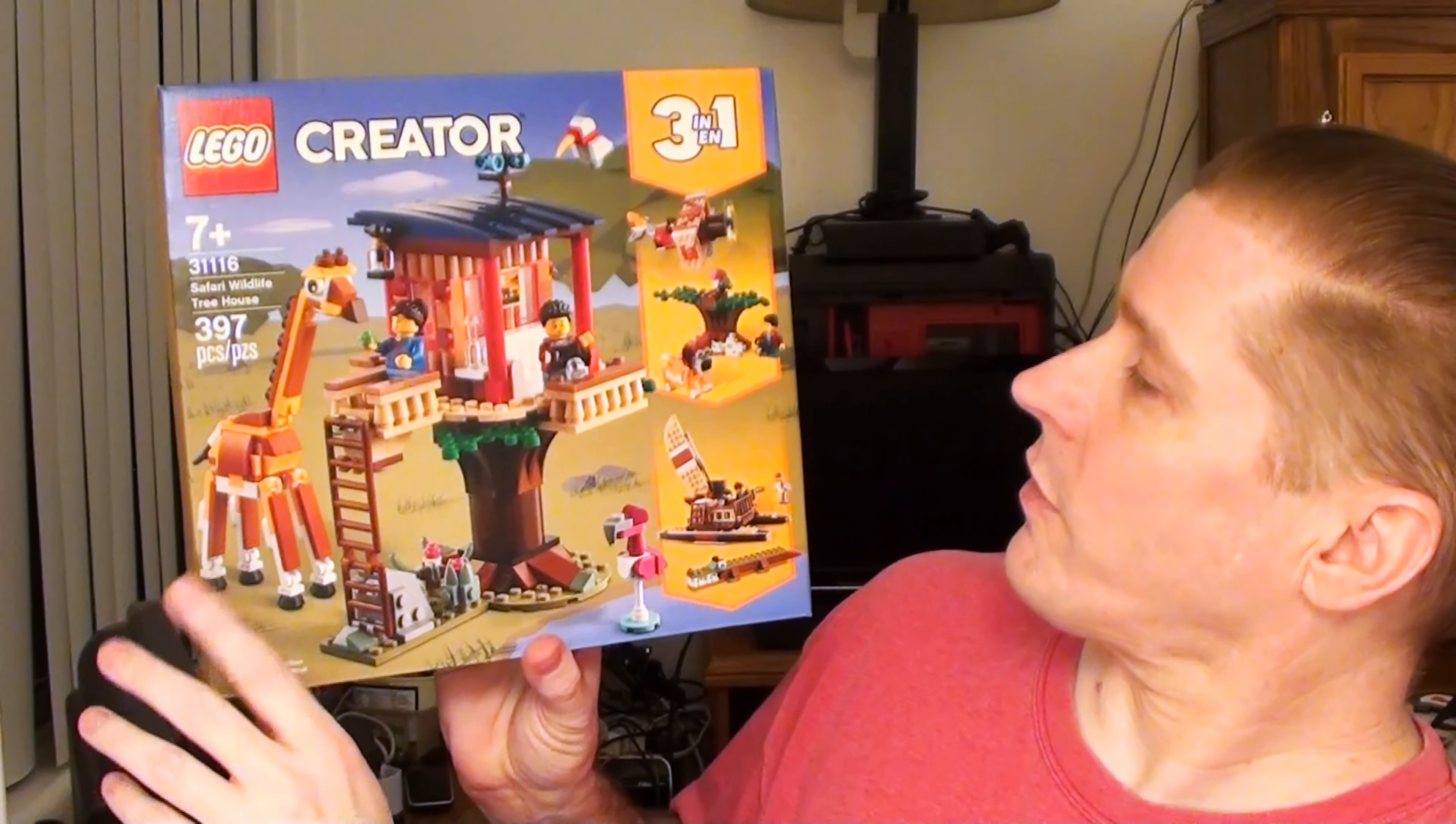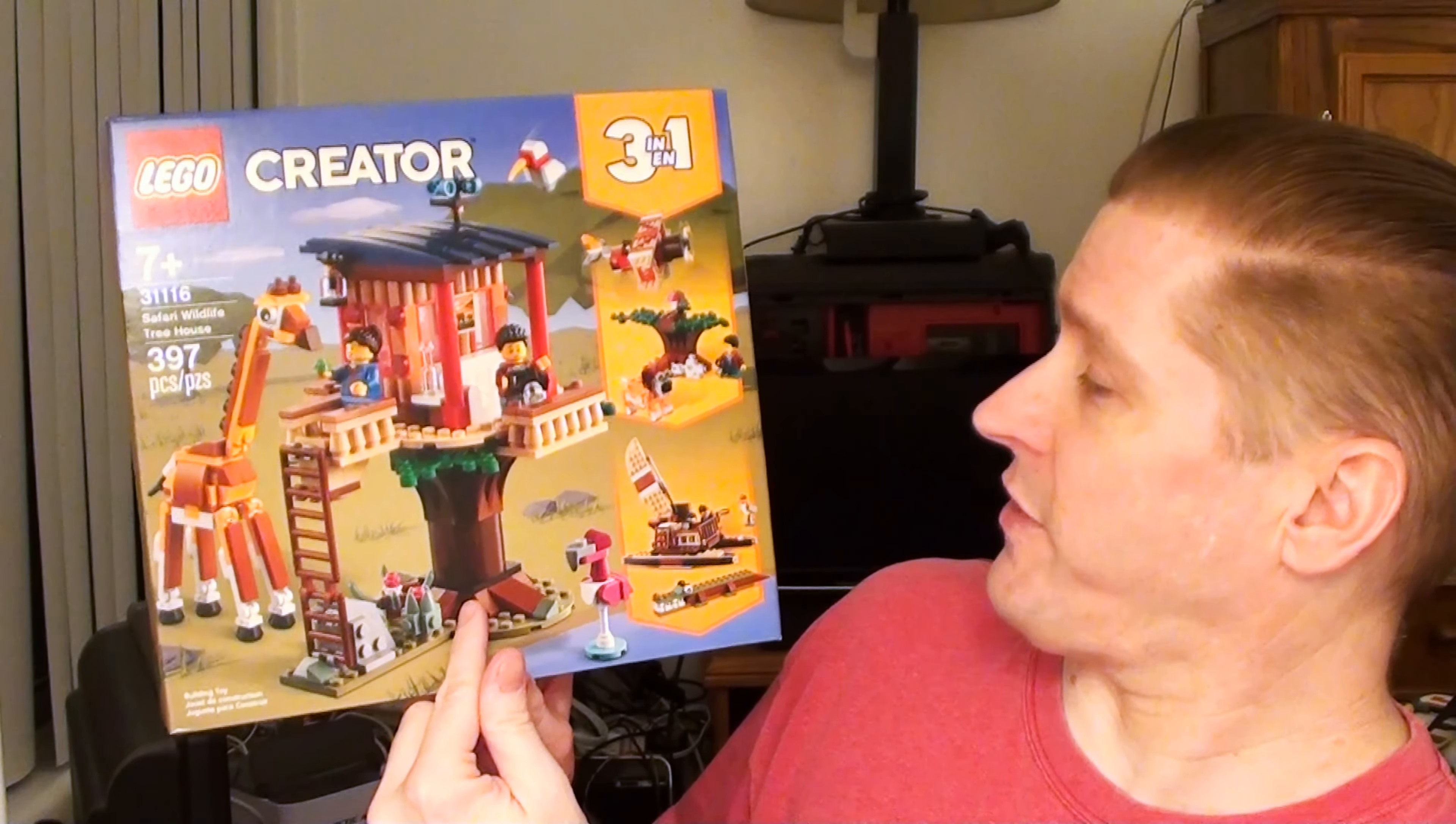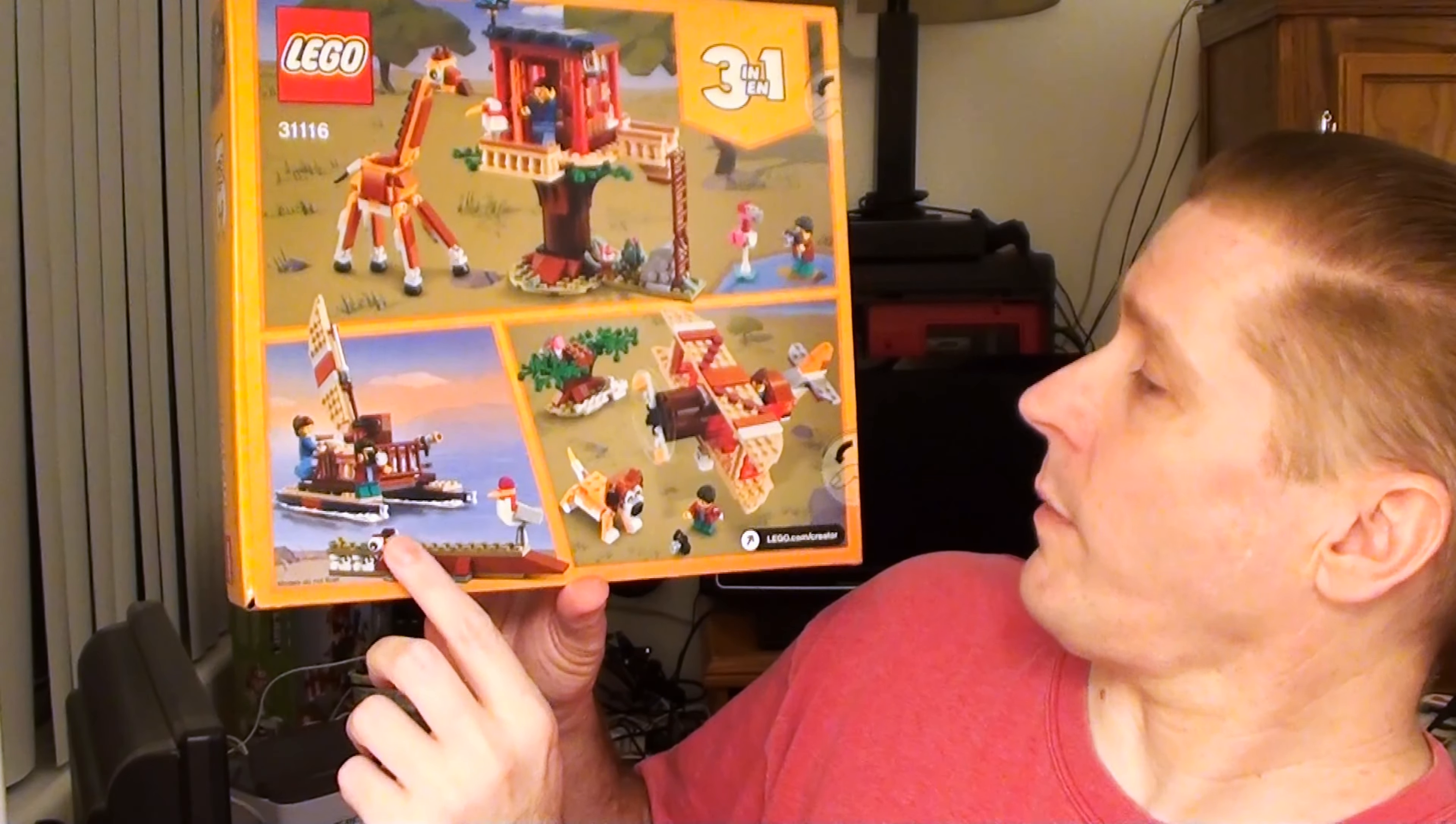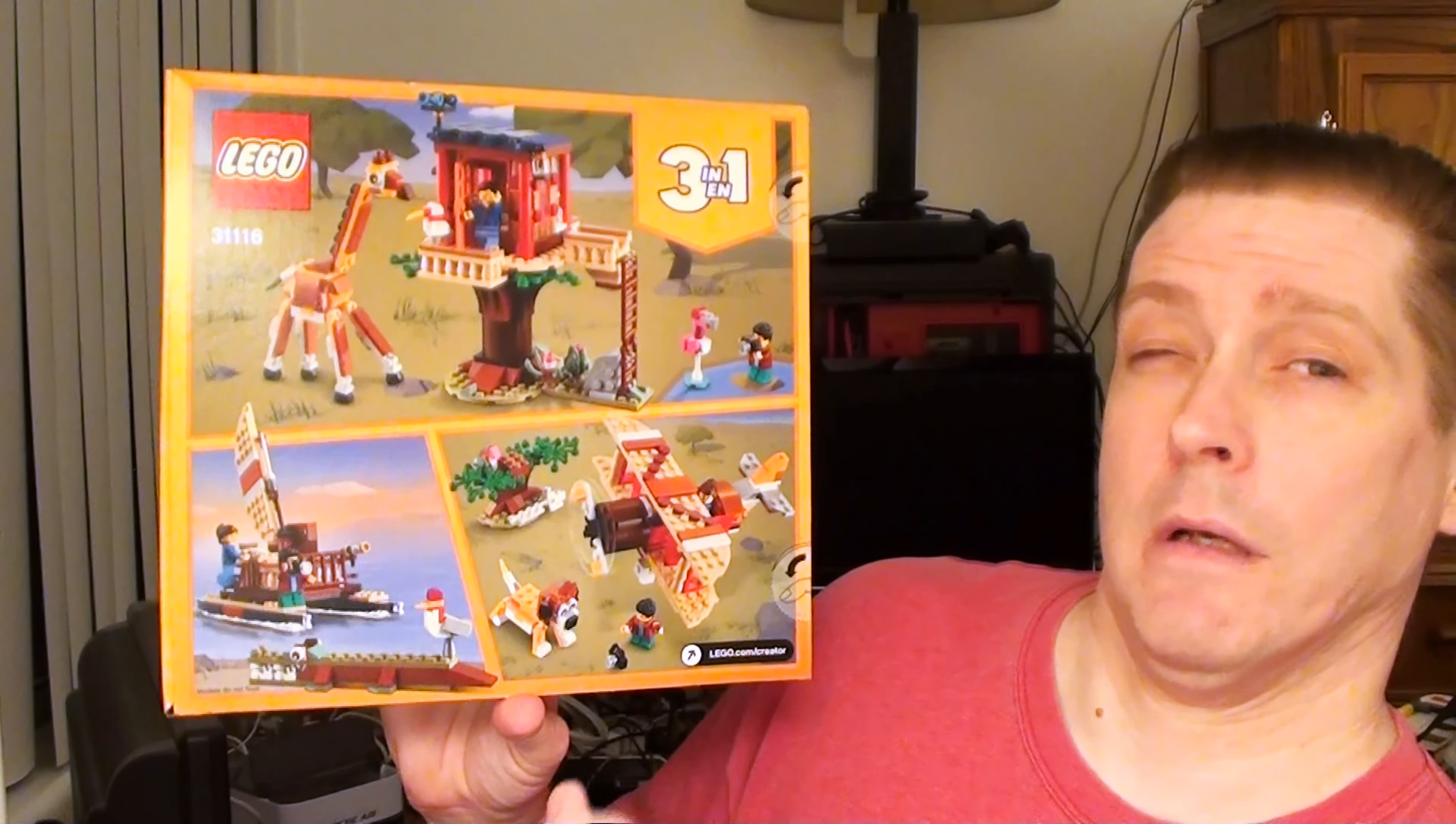Just by looking at the box, looks like we get a giraffe and a treehouse that's on a stump, and we get a pink flamingo. We also have two alternative builds. It looks like we can build some kind of a boat and an airplane.